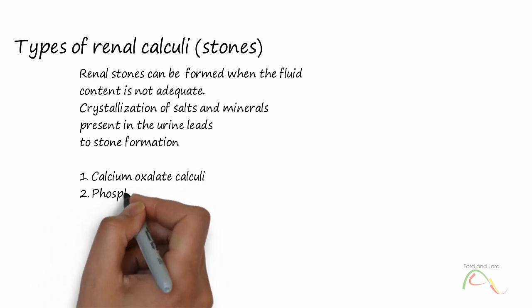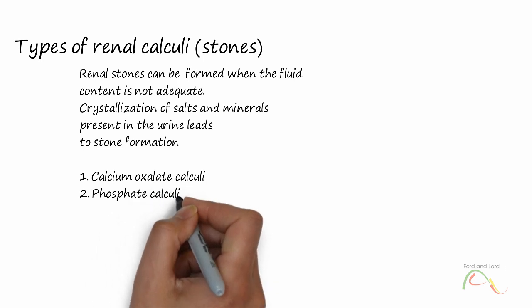Phosphate calculi occur in 15% of cases. These also grow in alkaline urine, most commonly in the presence of urea-splitting organisms. Such stones can become quite large and become what is known as staghorn calculus.